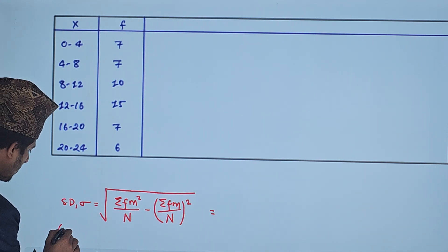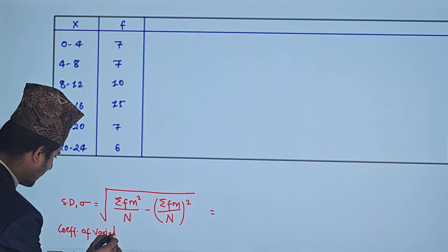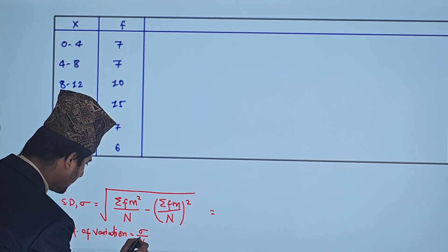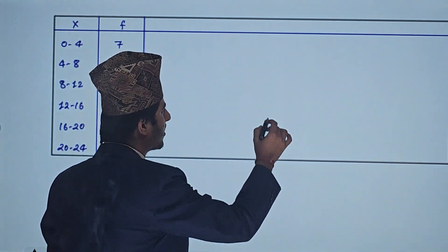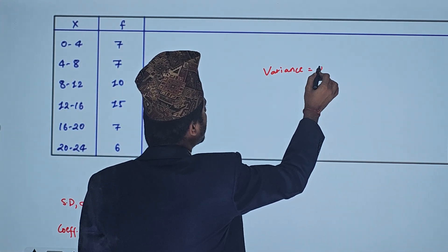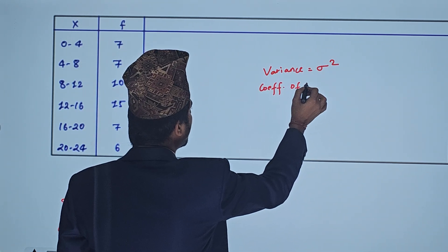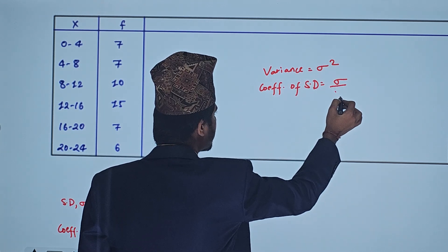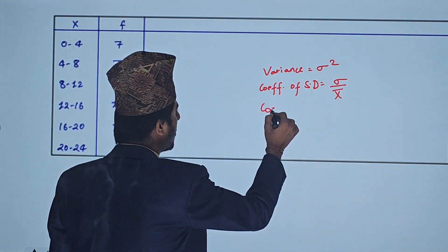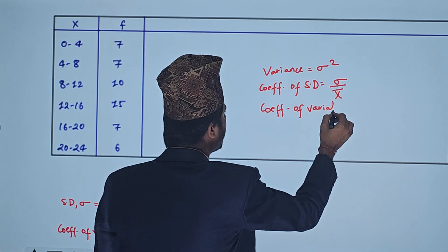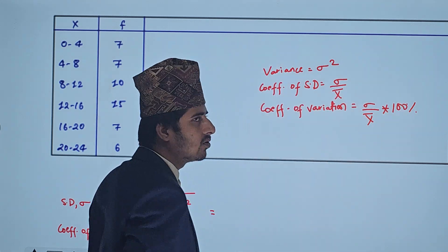The coefficient of variation (CV) formula is: standard deviation divided by mean, multiplied by 100%. Variance is the square of the standard deviation. The coefficient of standard deviation is standard deviation divided by mean. You can write the formula in the given direction.